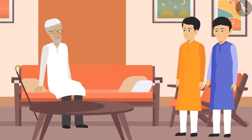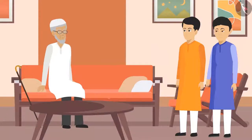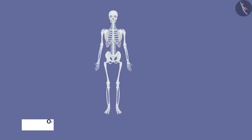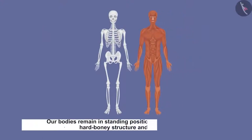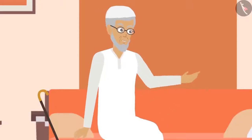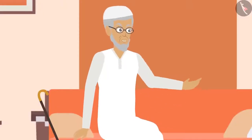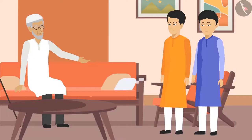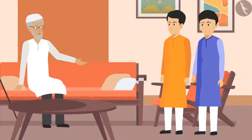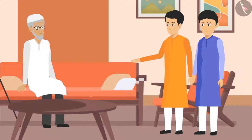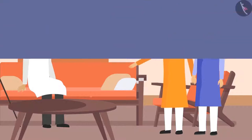'Let's start from a basic question: how does our body remain in the standing position?' 'Chacha ji, our bodies remain in the standing position with the help of the bony structure and muscles.' 'Right! Now tell me, how do our body parts move?' 'Chacha ji, our body parts use muscles for movement. Most of our muscles are attached to our bones. These muscles contract and cause movement in the bones.'